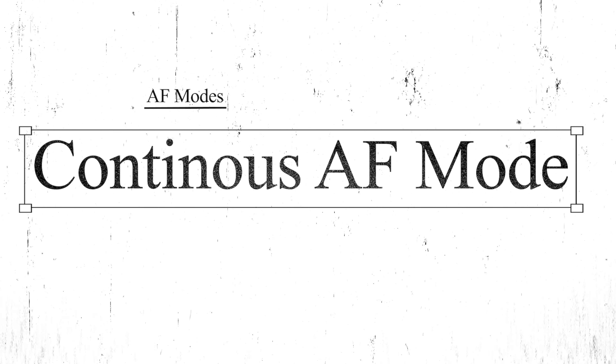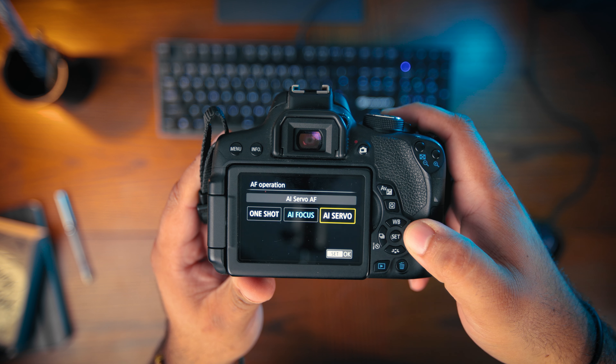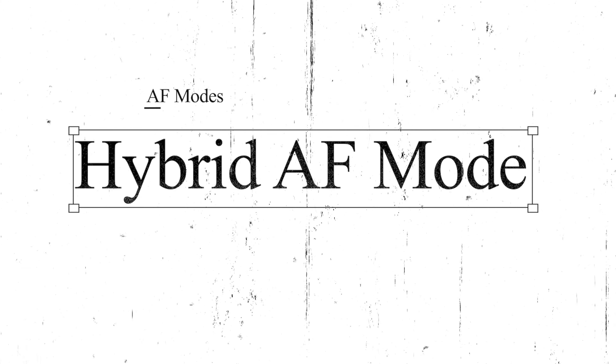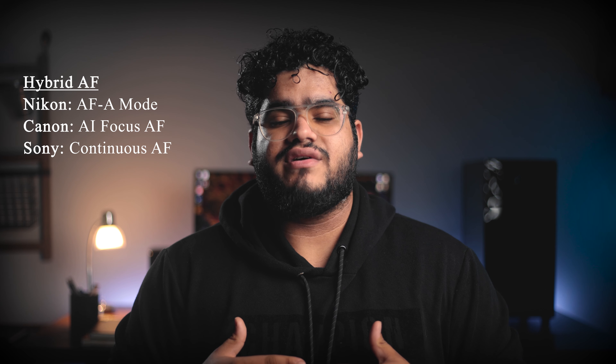The second autofocus mode is continuous autofocus mode. Continuous autofocus is good because it tracks the subject even if the subject moves within the frame. This is ideal for wildlife photography or sports photography, where the subject is in constant movement.